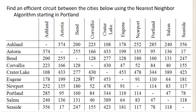Here we have a big table of travel distances between some cities in Oregon. For example, Ashland to Astoria is 374 miles. We also see Ashland to Astoria here as well — everything is mirrored and shows up in the table twice.